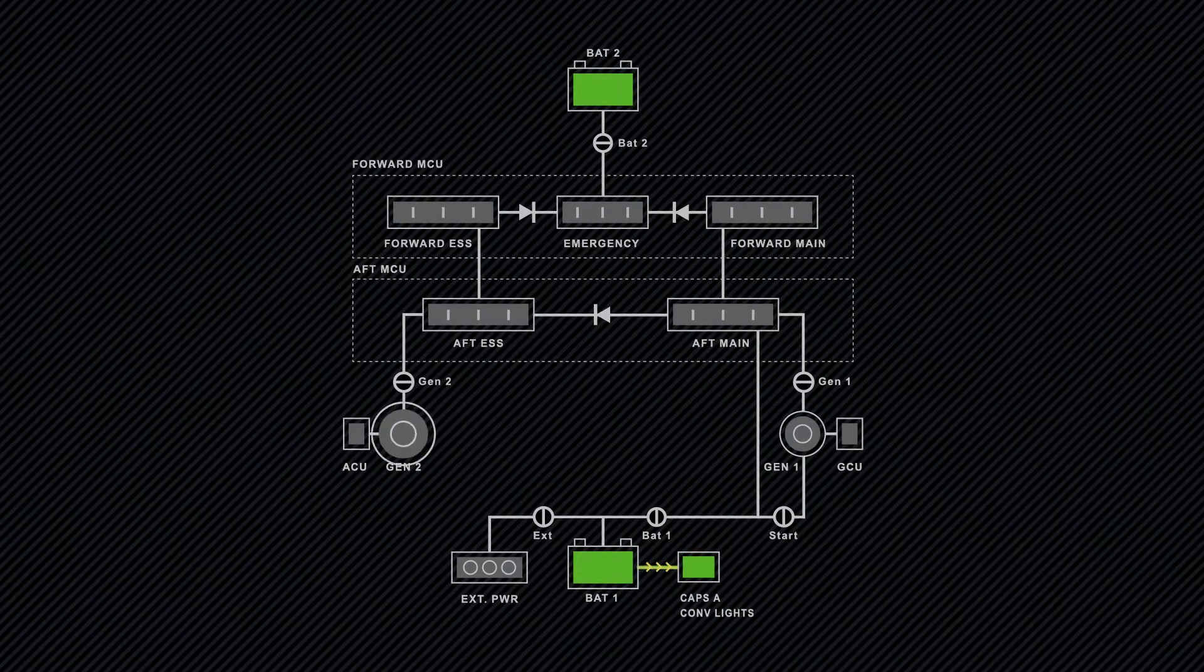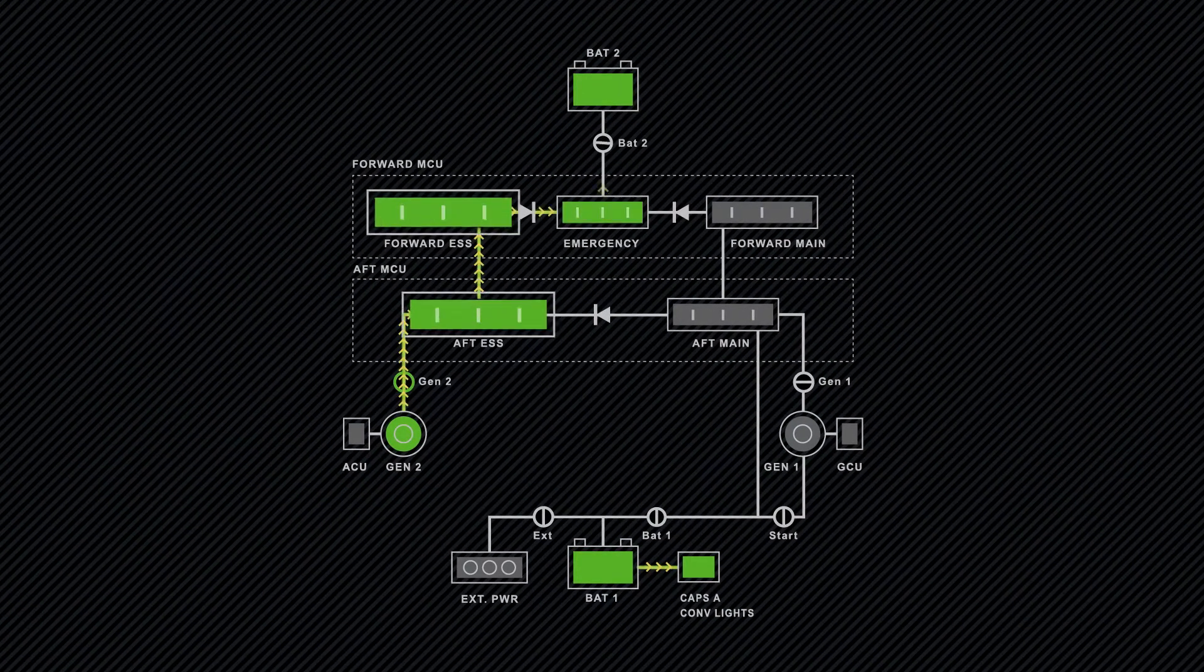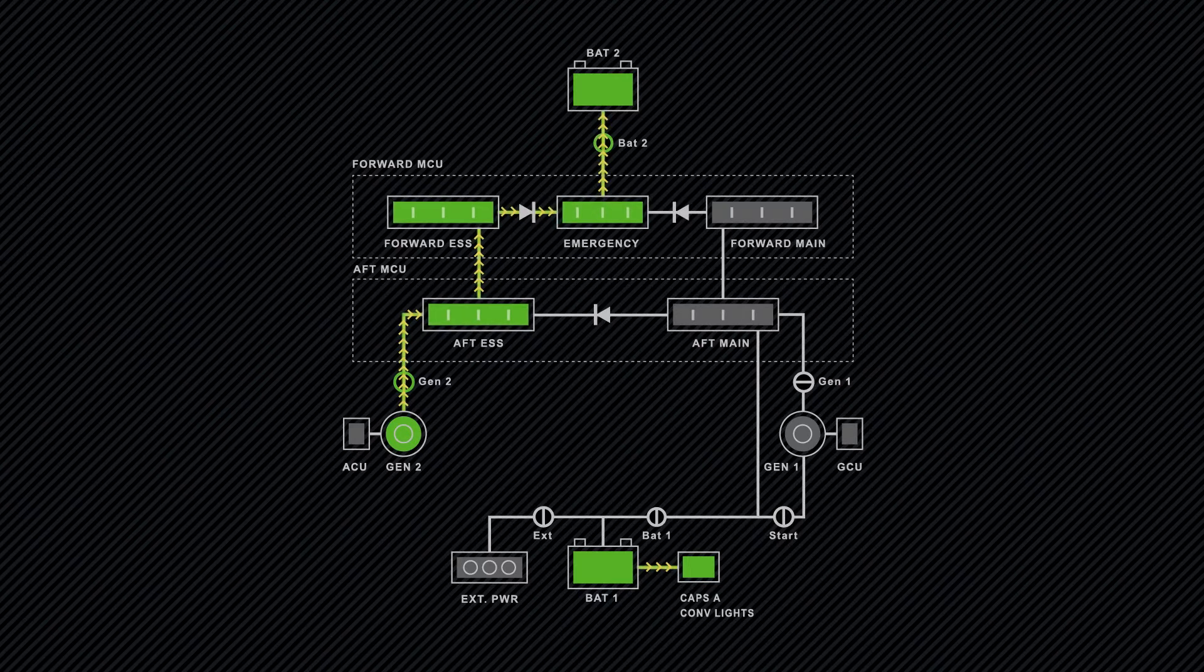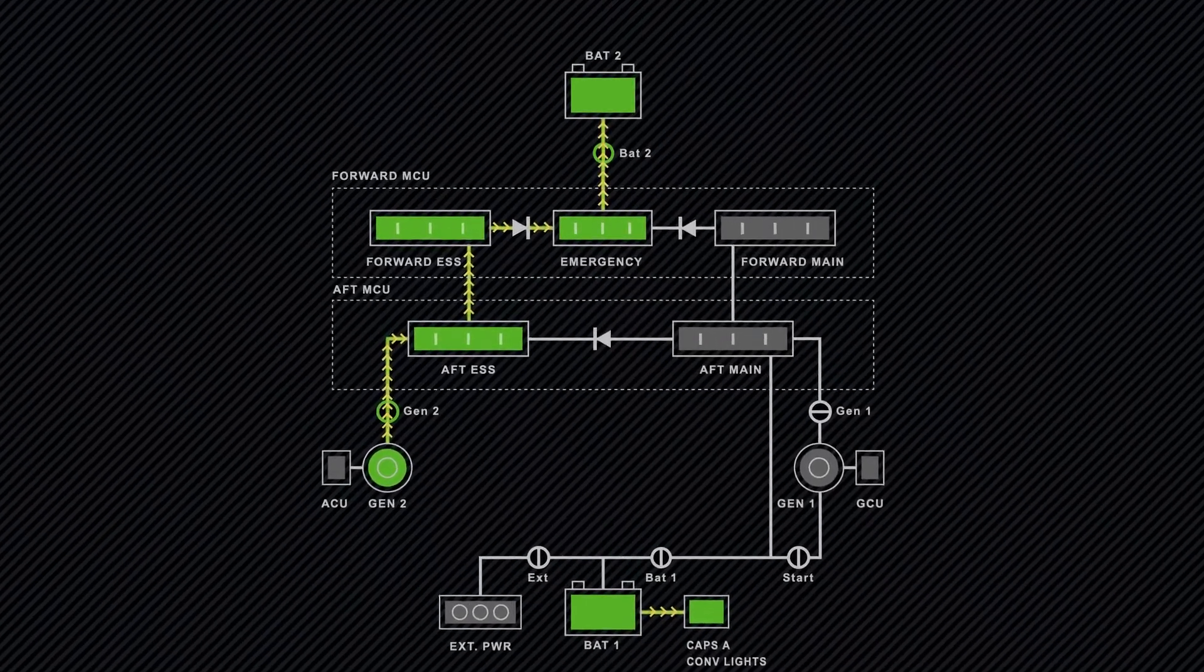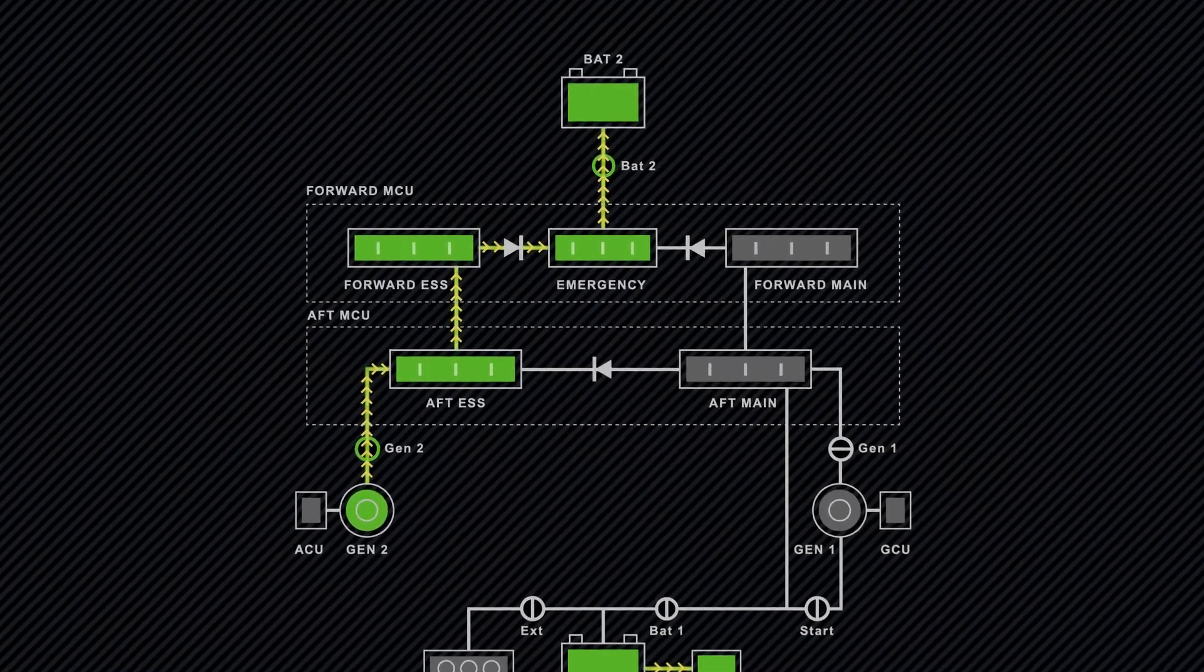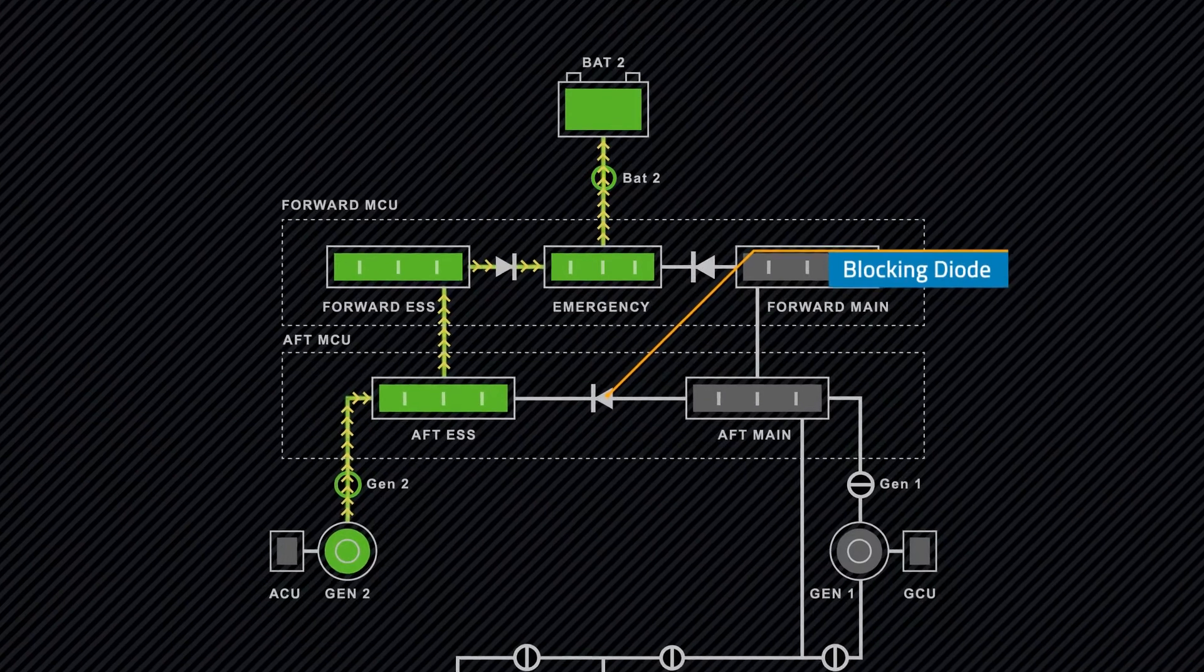While Gen 2 is capable of supplying enough power for the essential and emergency buses while still charging Battery 2, it is not designed to power the main bus and is prevented from doing so by the presence of a blocking diode.